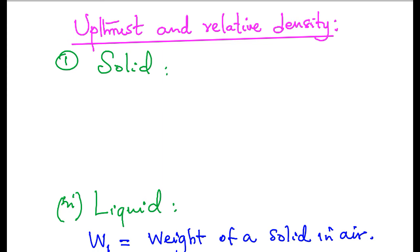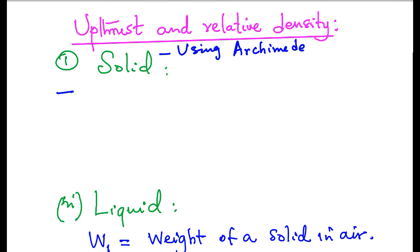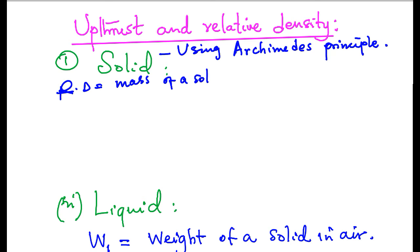How then do we determine the relative density of a solid using Archimedes principle? Relative density by definition is the mass of the solid divided by an equal mass of a given volume of water. So from the definition, relative density is equal to mass of a solid divided by mass of equal volume of water.